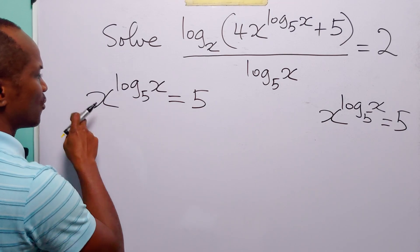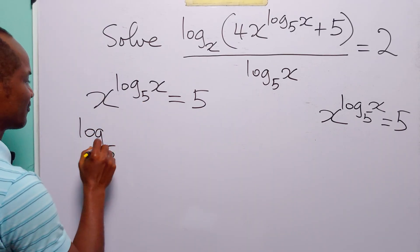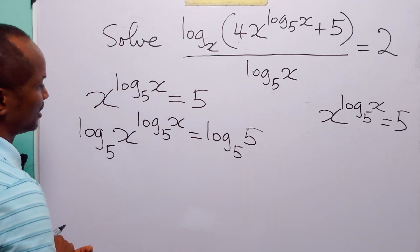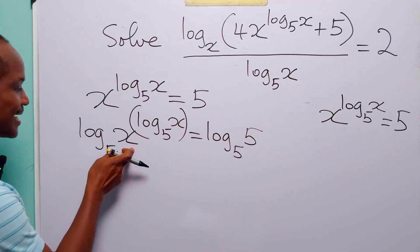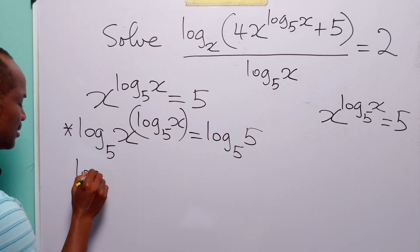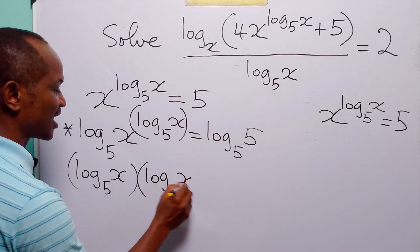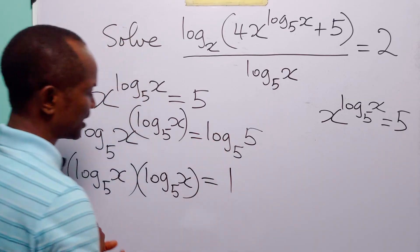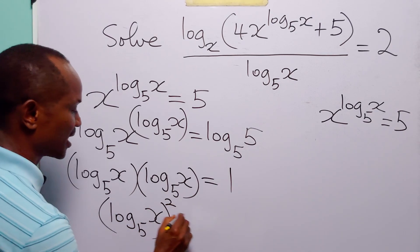To solve this equation, we are going to take log of both sides, working in base 5. So we have log base 5 of x to the power log base 5 of x, equals log base 5 of 5. The next thing we do is apply the power rule of logarithms to the left-hand side — we bring down the exponent to the front as a multiplier. This gives us log base 5 of x, times log base 5 of x, equals log base 5 of 5, which is 1. So on the right-hand side we have 1, meaning (log base 5 of x) squared equals 1.